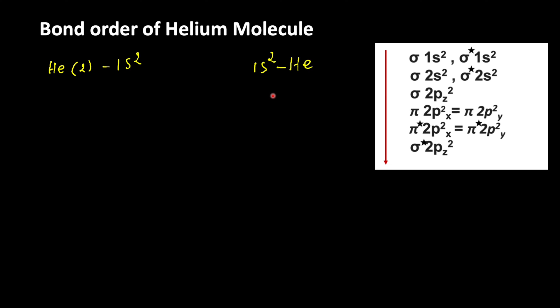We can write the electronic configuration of the helium molecule. Helium molecule possesses 4 electrons. The electronic configuration of the helium molecule is: sigma 1s², and after that the electrons enter into the antibonding sigma star 1s².